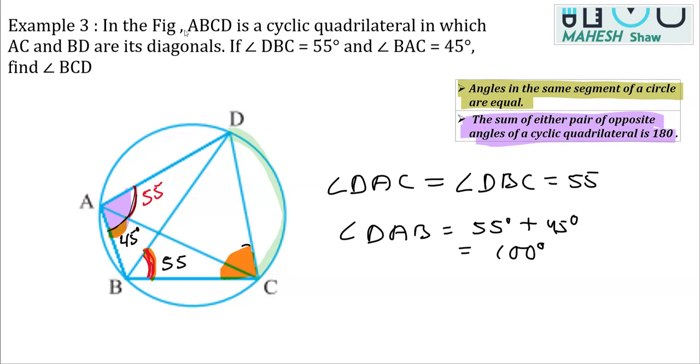Now, as I said that opposite angles of cyclic quadrilateral are supplementary. So we can write angle DAB plus its opposite angle that is angle DCB is equal to 180 degrees and the reason is opposite angles, sum of that pair of opposite angles of cyclic quadrilateral is 180 degrees.